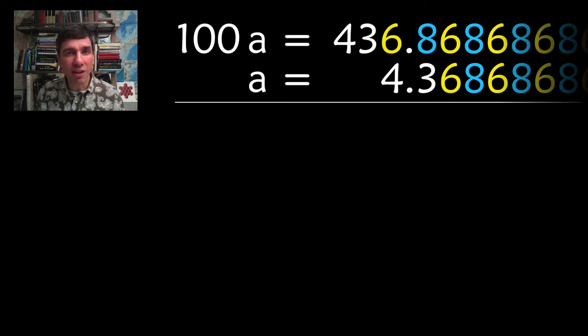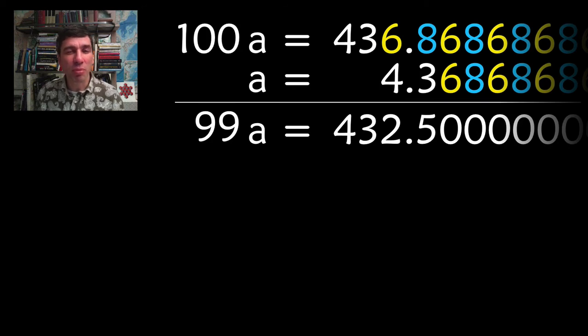So we have 100a is equal to 436.86868686. And we've got a is equal to 4.368686868. Subtract the two. On the left-hand side, we get 99a. On the right-hand side, hey presto, the 8s and the 6s cancel. So we end up with 432.5.